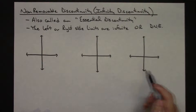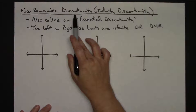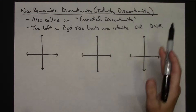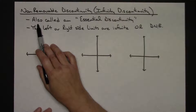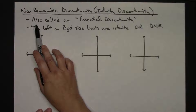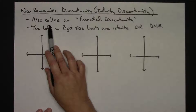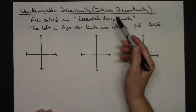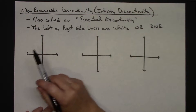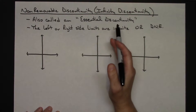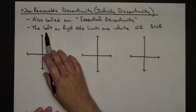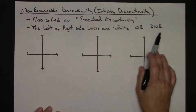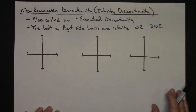For the infinite discontinuity, there are more scenarios or cases to look at. An infinite discontinuity can also be called an essential discontinuity depending on the textbook or website — those two names mean the exact same thing. In general, you know you've got an infinite discontinuity if the left or right side limits are infinite or they don't exist.